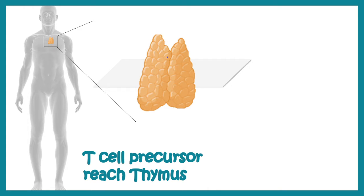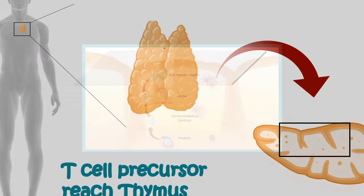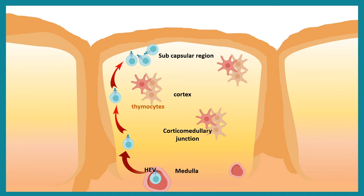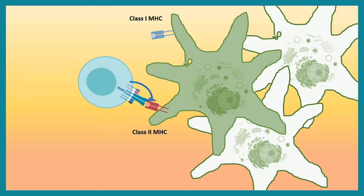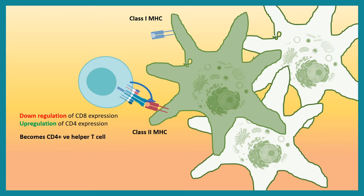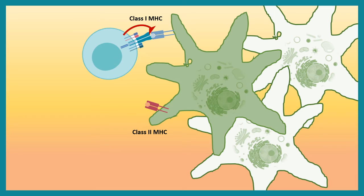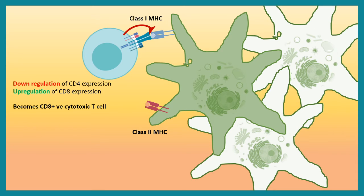In the thymus, T cells undergo thymic training through several rounds of selection, each ensuring certain capabilities are selected. In the thymic medulla or corticomedullary junction, medullary epithelial cells express antigens on class 1 or class 2 MHC. Double positive T cells recognizing class 2 MHC-bound peptides upregulate CD4 and downregulate CD8. Conversely, cells recognizing class 1 MHC-bound peptides upregulate CD8 and downregulate CD4, becoming cytotoxic T cells.